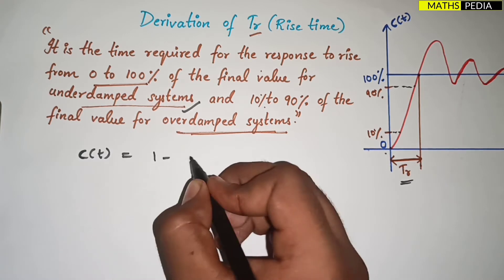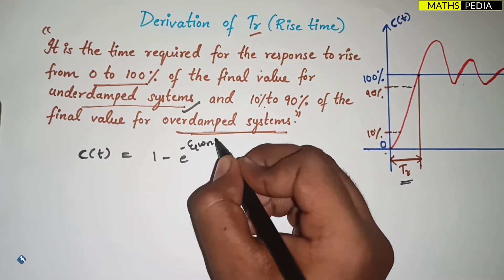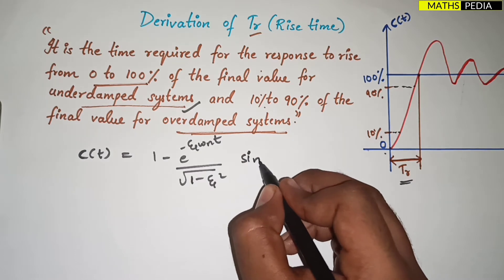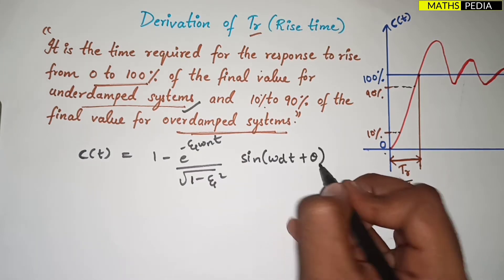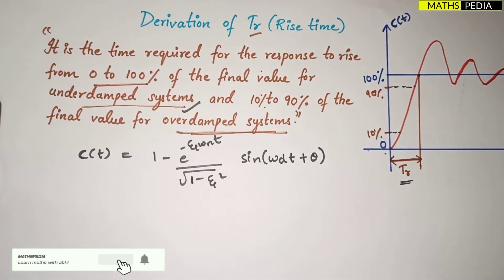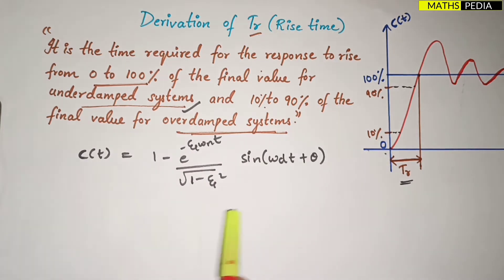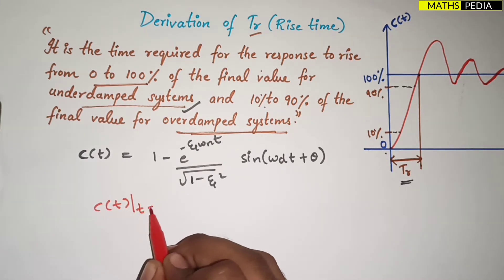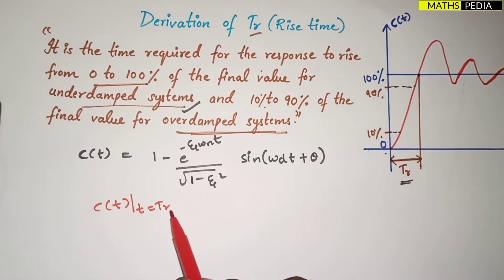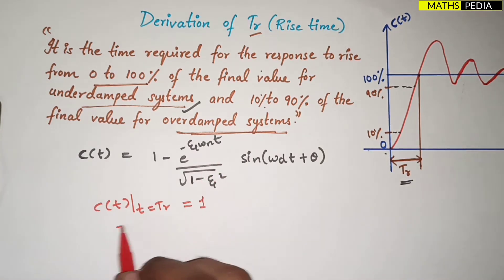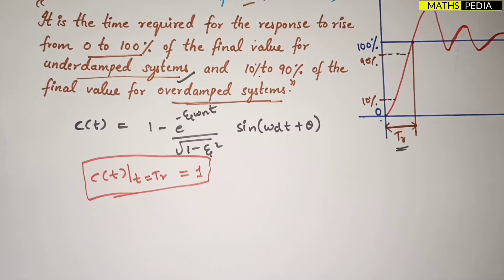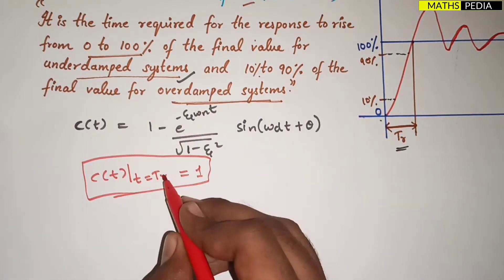The response c(t) is given as: c(t) = 1 minus e^(−ζωₙt) divided by √(1 − ζ²), multiplied by sin(ωd·t + θ). For the rise time derivation, we substitute t = T_r and set c(T_r) equal to 1, since at rise time the response has reached 100 percent of the final value.